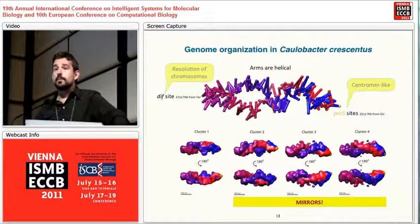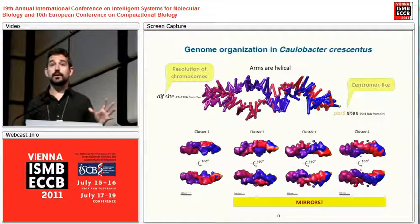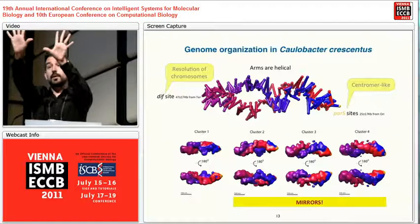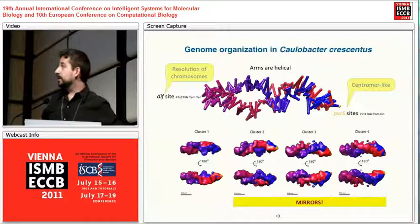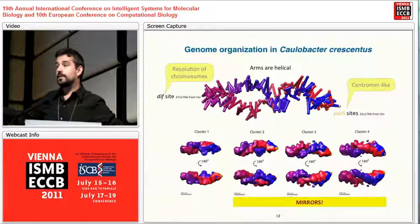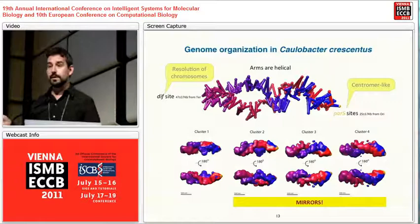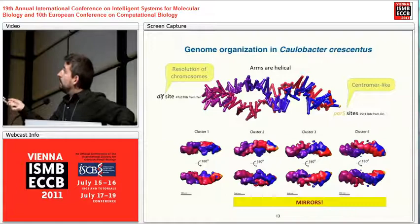One problem we haven't fully solved yet is the mirroring problem. We work in distance space, not Cartesian space — we only look at distances between points. My two hands have fingers at the same distances but are mirrors of each other, so without a third reference point we can't distinguish them. We get four different solution clusters: cluster one is a perfect mirror of cluster two, cluster three is a perfect mirror of cluster four, and cluster three is a half-mirror of cluster one. We provide all solutions, but note that these are mirrors. Nevertheless, we can still extract meaningful biology from these models.